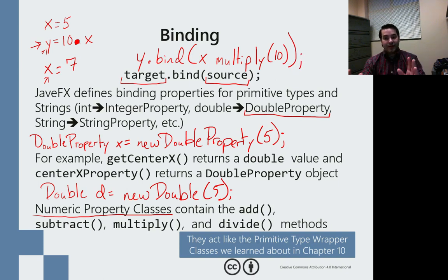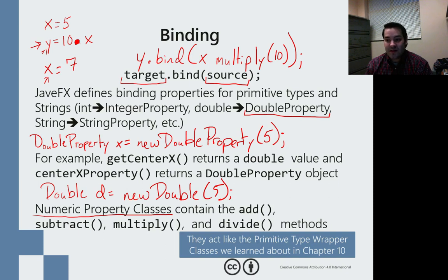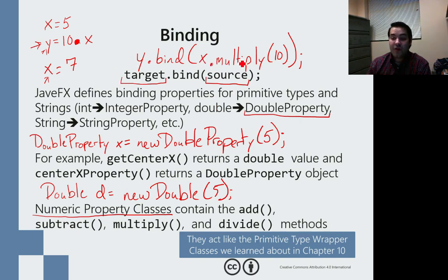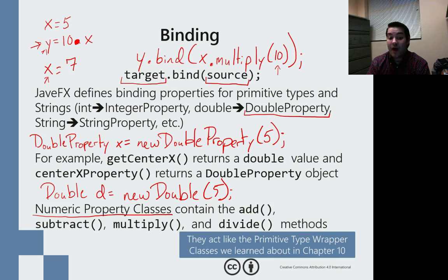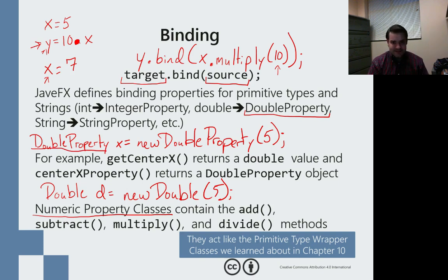Now what happens with this? This is where the confusion starts to occur — take a deep breath, pause it, maybe plug this in and see what happens. What's going on is: when x changes, y is going to change. How? Y is going to change by multiplying x by 10 and setting that equal to y. Y is not just an integer or a double; it's also a DoubleProperty.